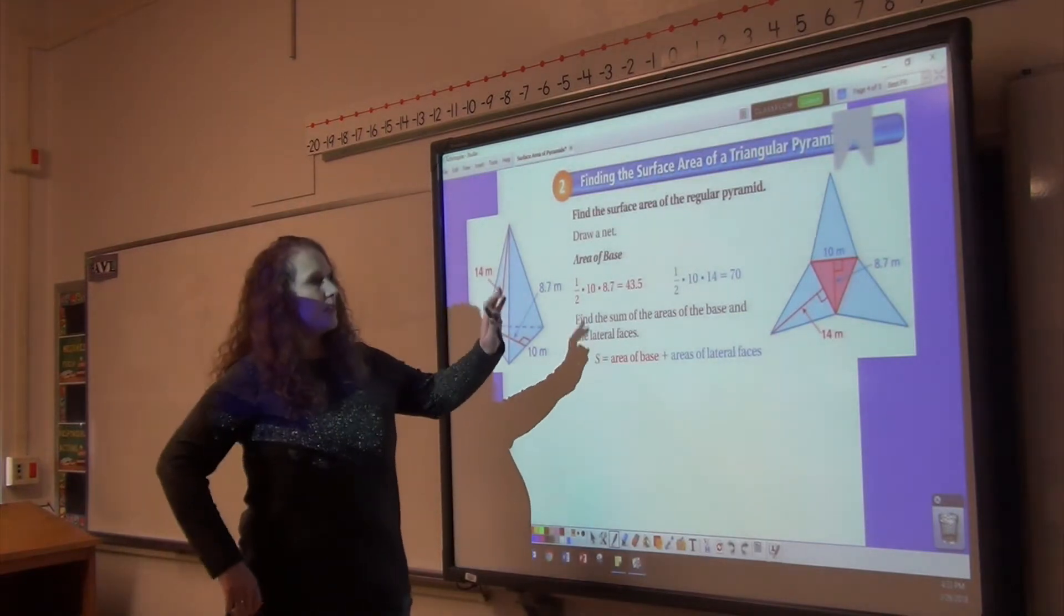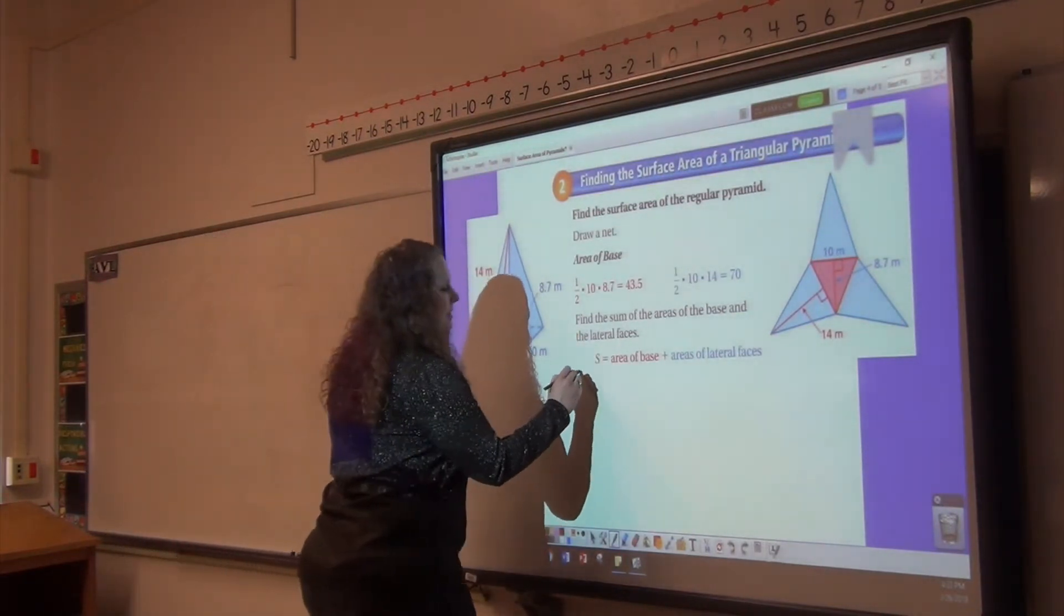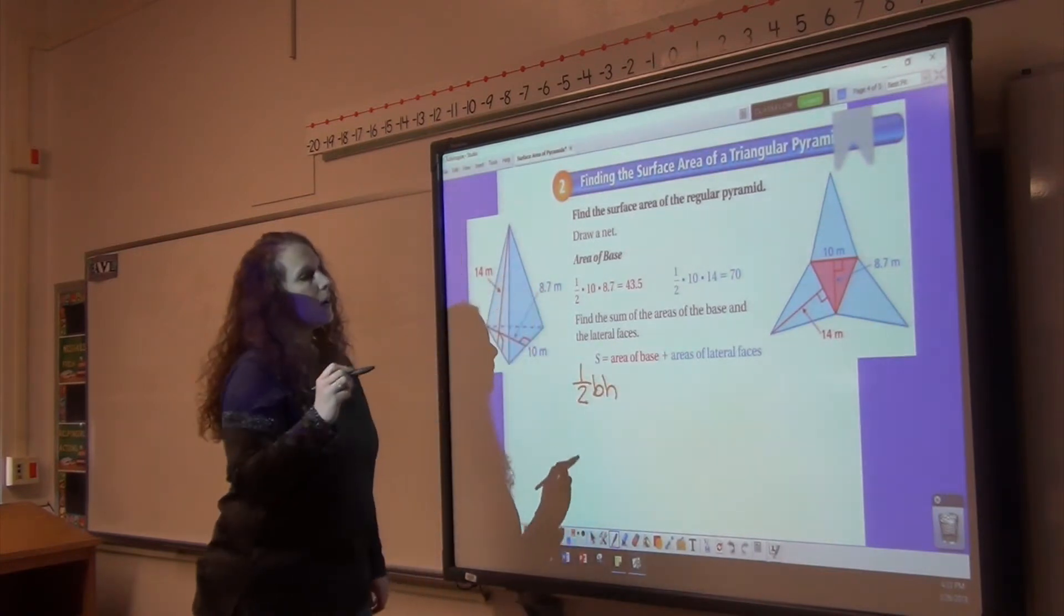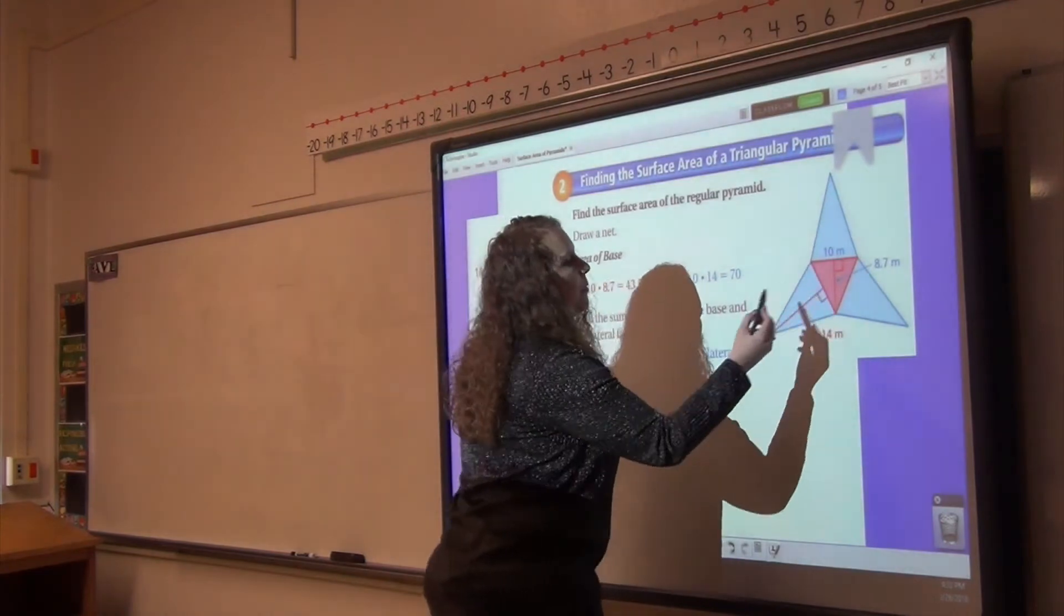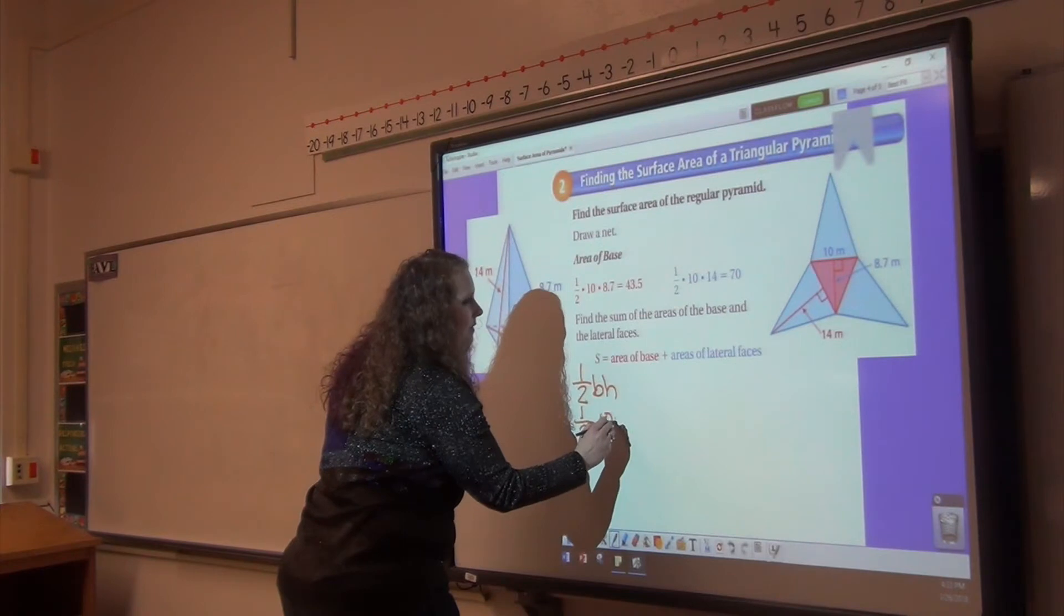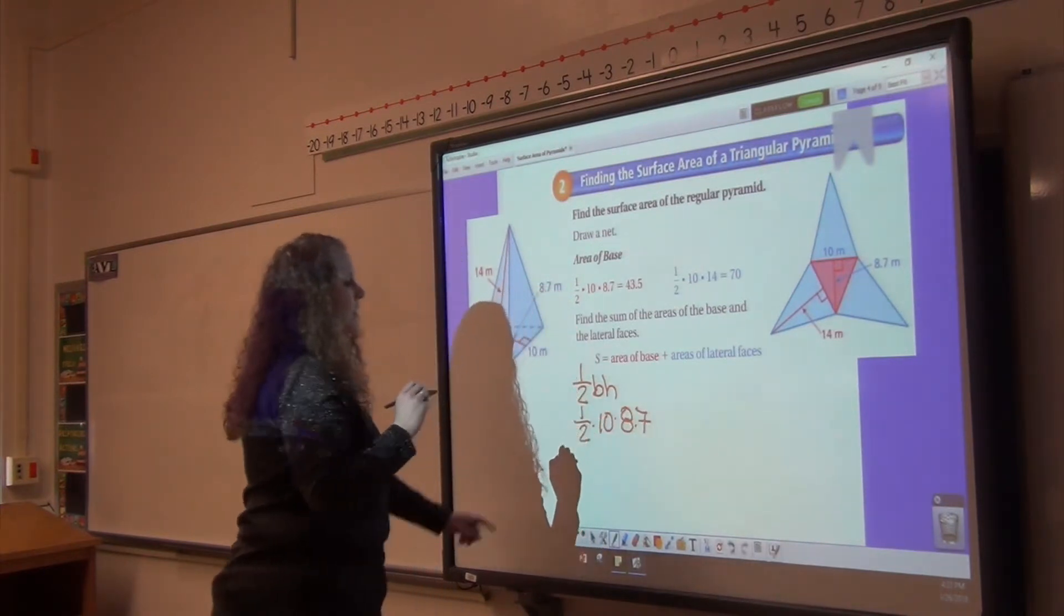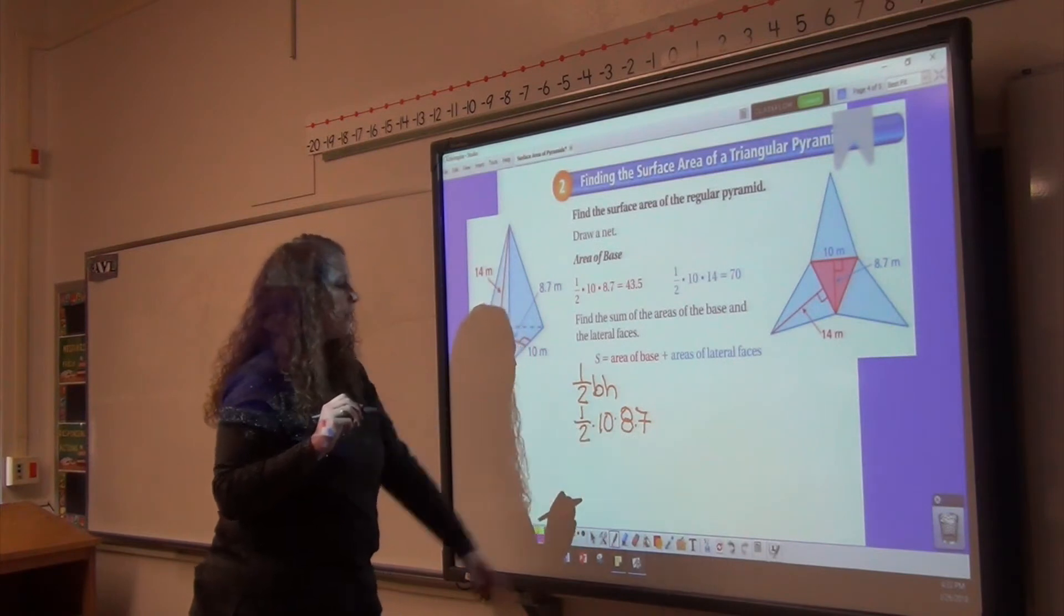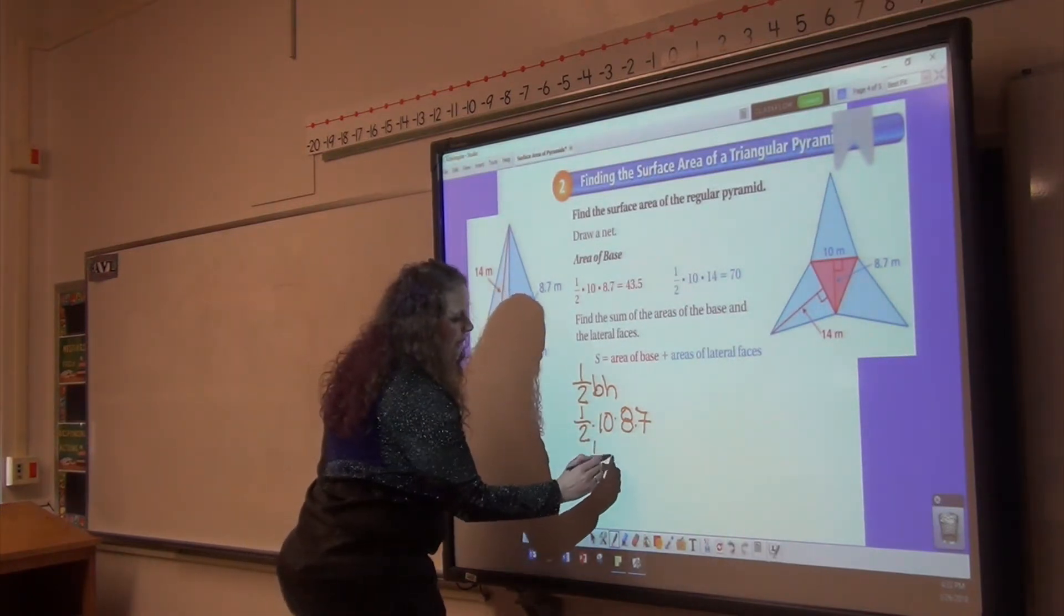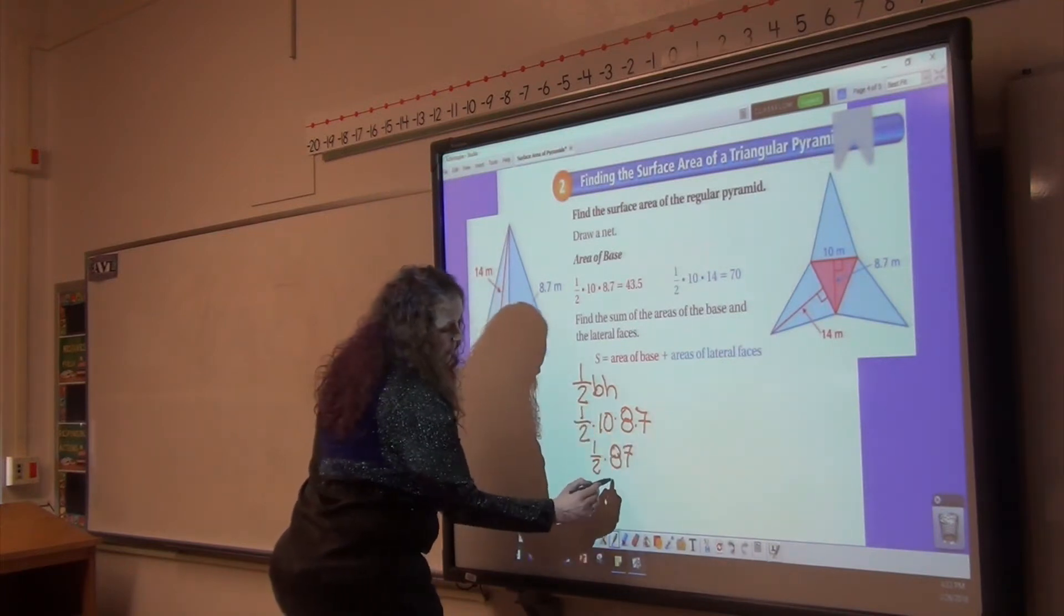This one has a triangular base. So the area of the base is going to be one half base height. My height is 8.7, and my base is 10. So it's one half times base times height. And so we have one half times 87, which is 43.5.